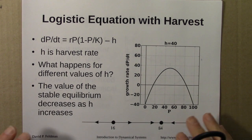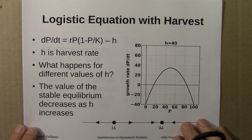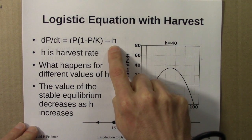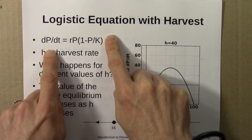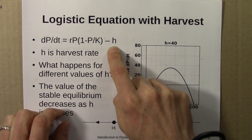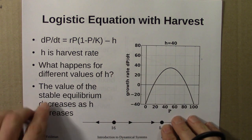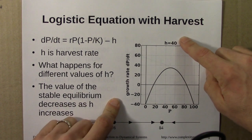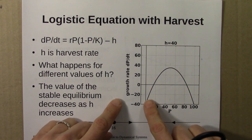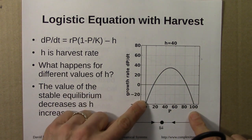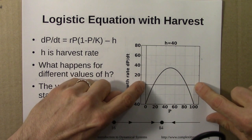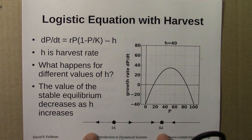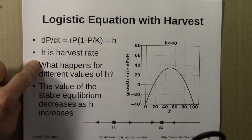Then we looked at a modification of the logistic differential equation. I added a harvest term h. The population is growing, doing its own thing, but every year we subtract h fish from the population. We asked what happens for different values of h. If h=40, then this parabola shifts down and the fixed points move in. Here's the phase line for that situation: a stable fixed point at 84, an unstable fixed point around 16.